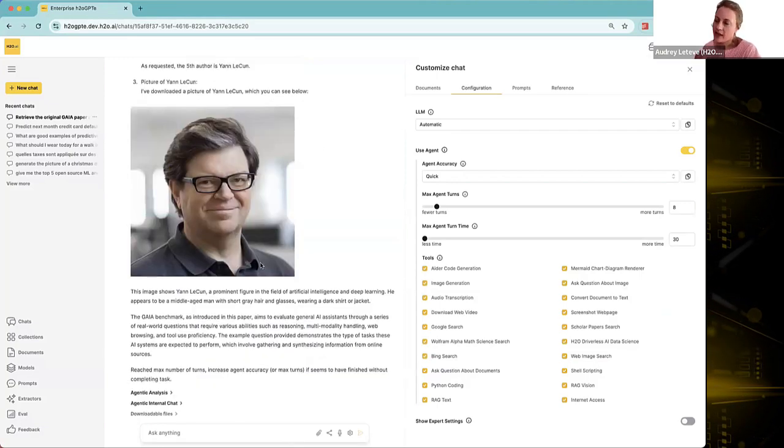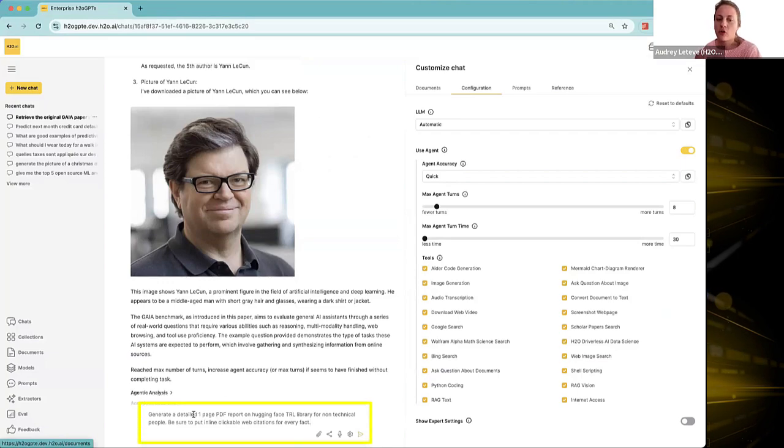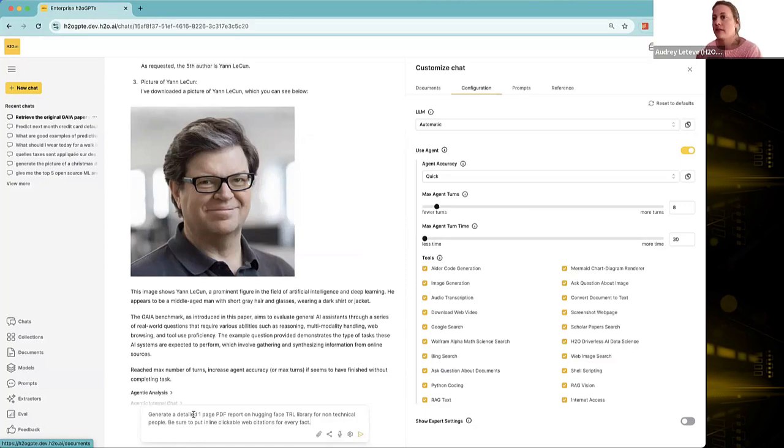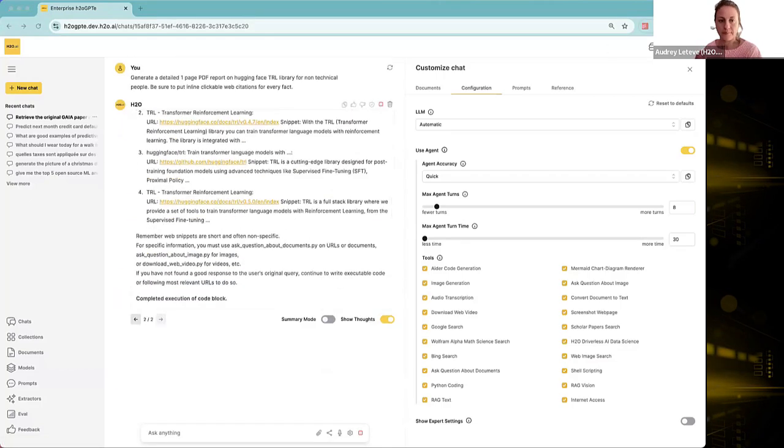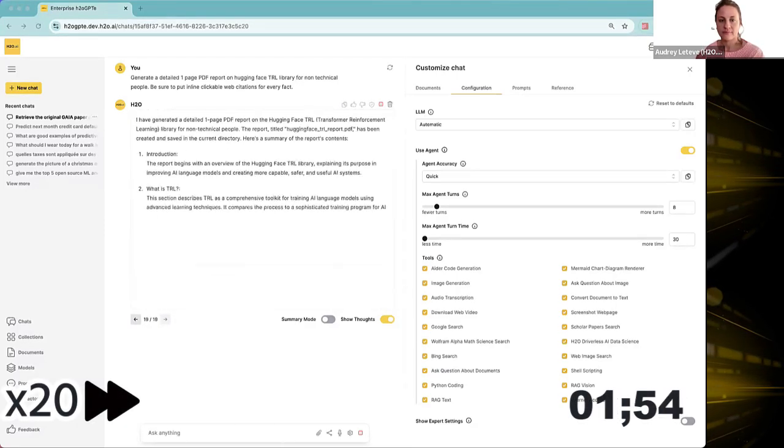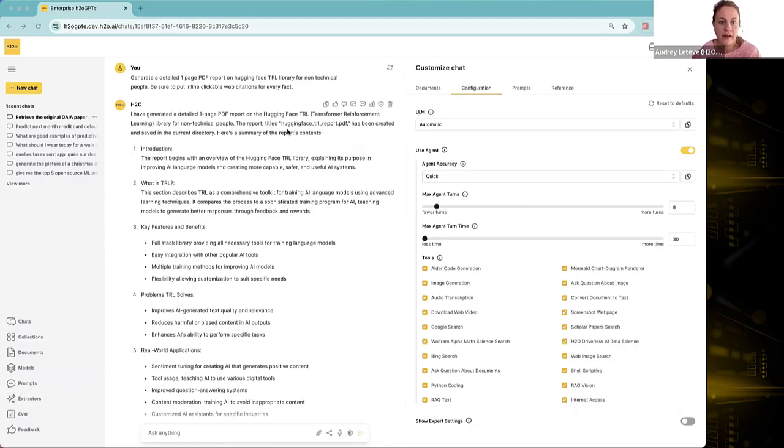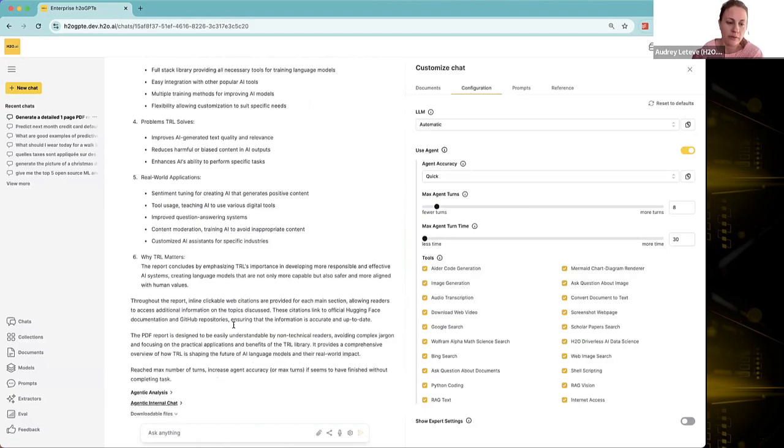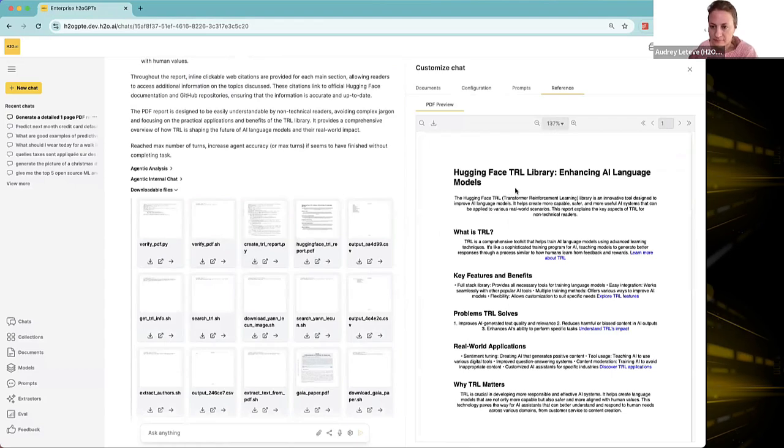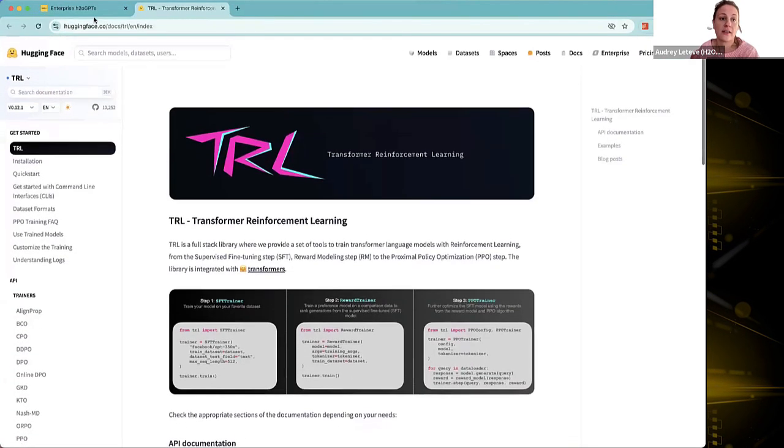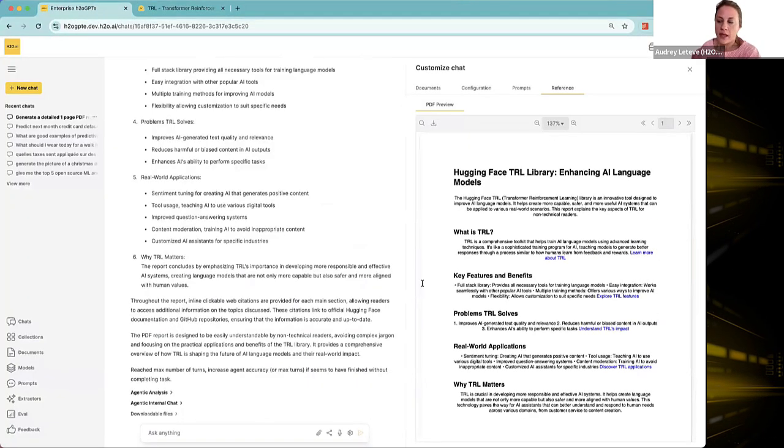Next, let's stay into the subject of AI and let's generate a detailed report as a PDF as well, this time on the Hugging Face library TRL. But let's ask H2O GPT to generate a report for a non-technical audience. Let's also ask it to create clickable web citations for every single fact so then the user can actually click on them. All right. I'm going to show the thoughts as well. Awesome. So now I have a final answer here. I know that the PDF has been now created. And I have a summary as well of what is the content of that report. Let's have a look at the downloadable files. Oh, this one. Fantastic. And I do also have access to the link of the TRL library. Brilliant.